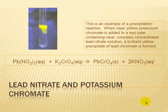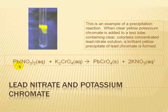The first type of reaction was electrolysis. The second type we're looking at is a precipitation reaction. When clear yellow potassium chromate is added to a test tube containing clear, concentrated lead nitrate solution, a brilliant yellow precipitate of lead chromate is formed. The equation is: lead nitrate plus potassium chromate gives lead chromate — the solid precipitate — and an aqueous solution of potassium nitrate.